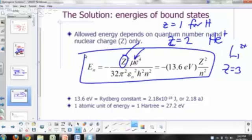So Z squared, what is this μ right here? That's a reduced mass. So that's going to be mass of electron, mass of nucleus over mass of electron plus mass of the nucleus.